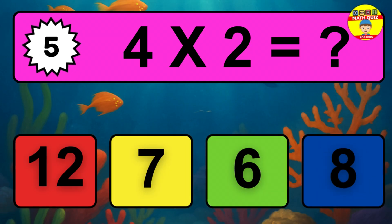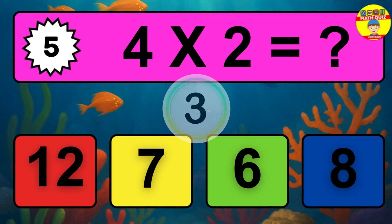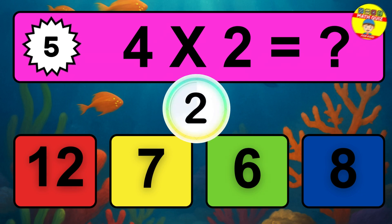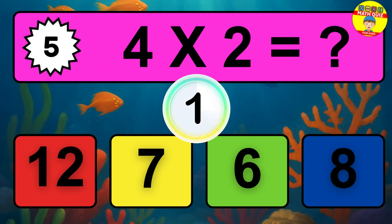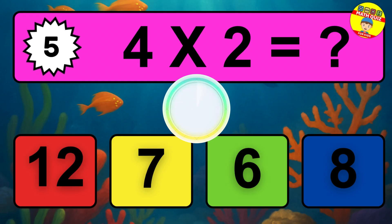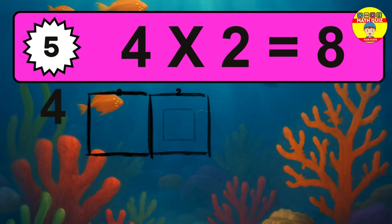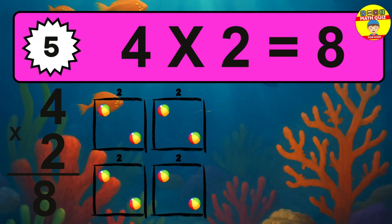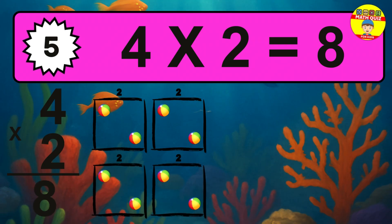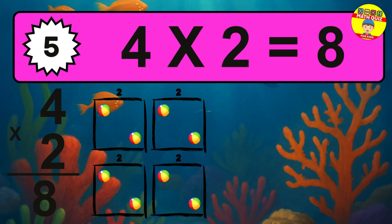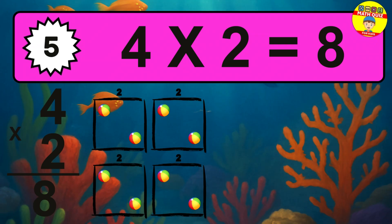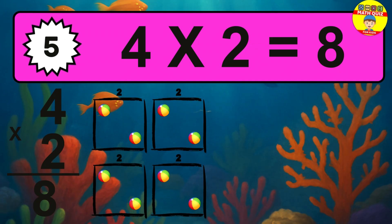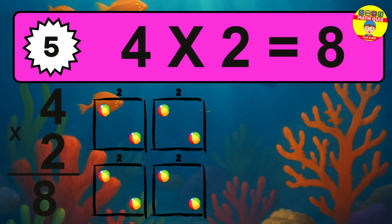Question 5. 4 times 2 equals what? The answer is 4 times 2 is 8. To calculate, we have 4 groups with 2 balls each one. So, how many balls do we have? 8 balls.